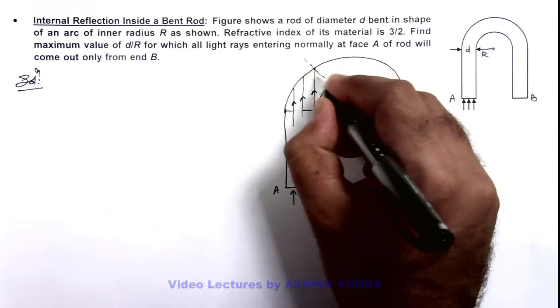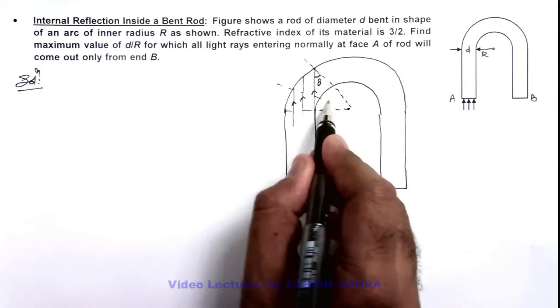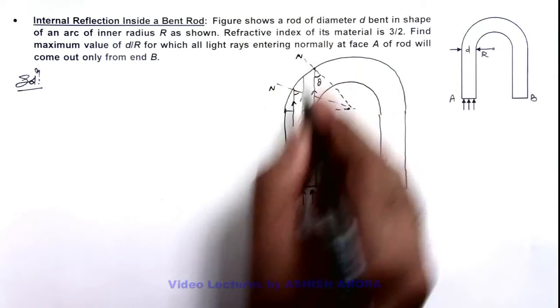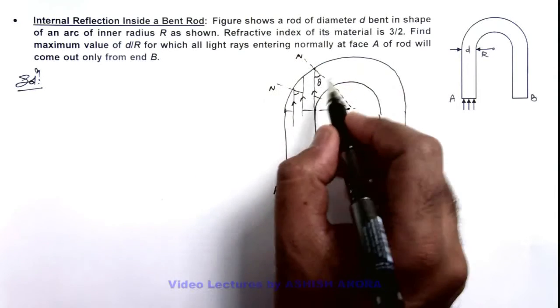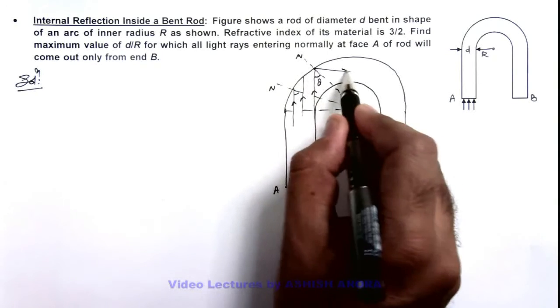This will be incident at the least angle of incidence, because for all other rays entering into A, the angle of incidence with respect to normal will be more than this. So if this angle theta is greater than critical angle, it will be internally reflected.